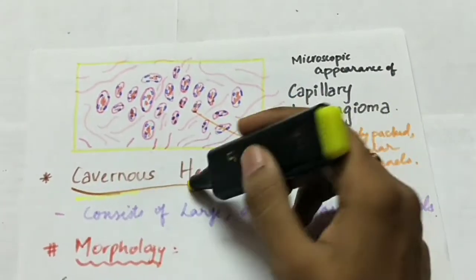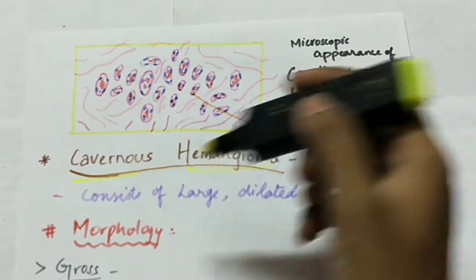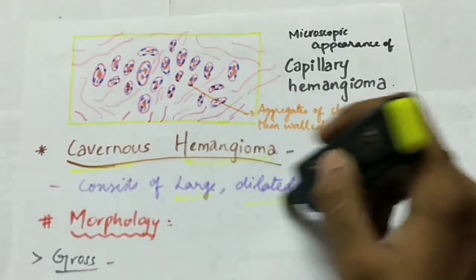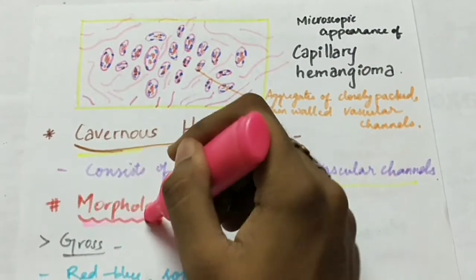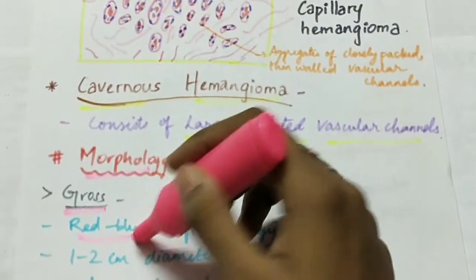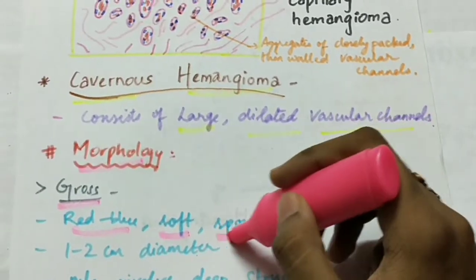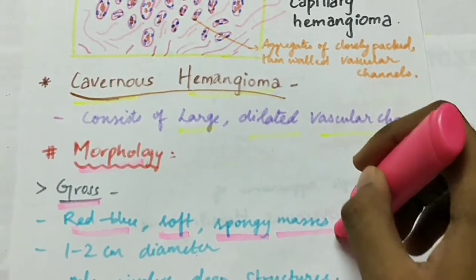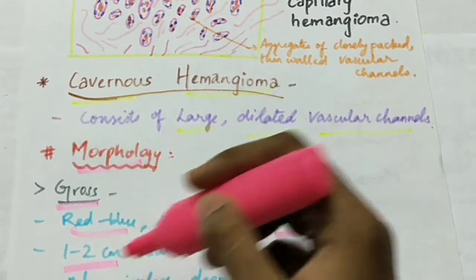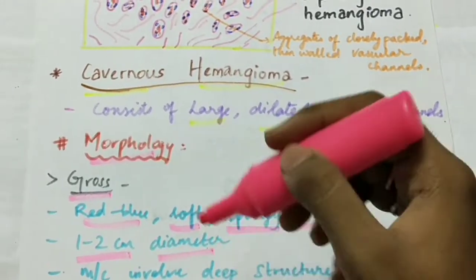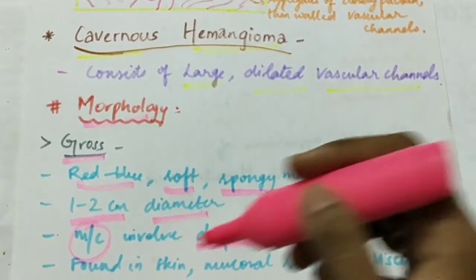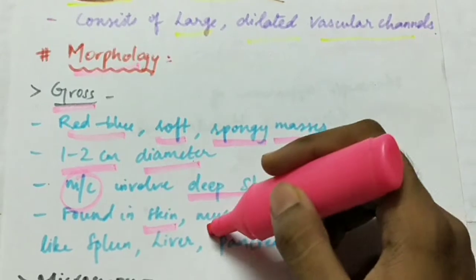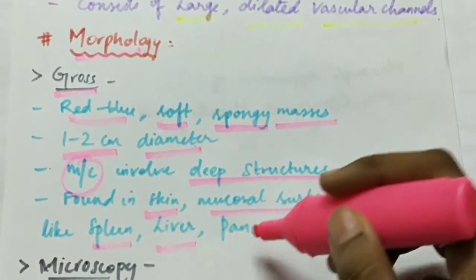Next, cavernous hemangioma, which consists of large dilated vascular channels. Grossly it appears red to blue in color, soft in consistency, and appears as a spongy mass. Its size ranges from 1 to 2 centimeters in diameter. Cavernous hemangioma most commonly involves the deep structures, and is found in the skin, mucosal surface, and visceral organs like the spleen, liver, and pancreas.